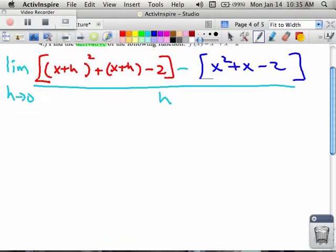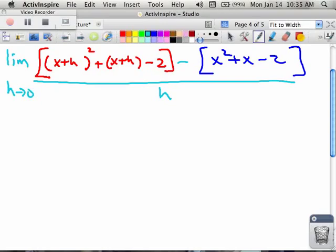Okay, let's work with the algebra then. So I have my limit as my h is turning into 0. And in the red, I will have x squared plus 2hx plus h squared.